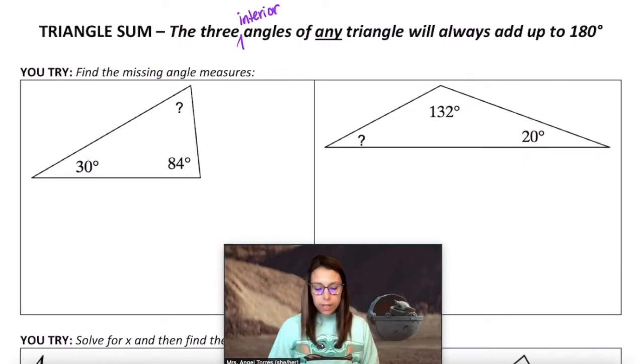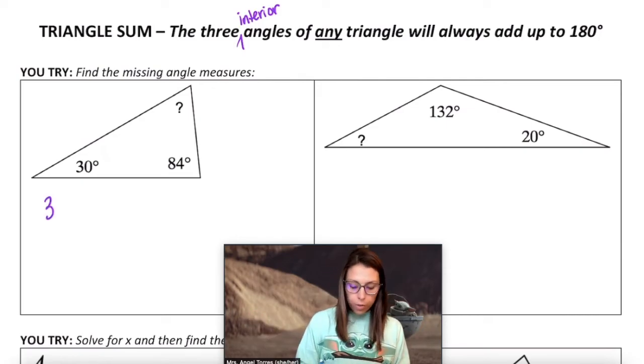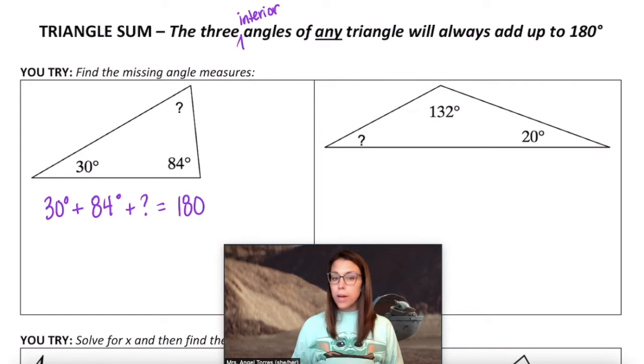So over here I have a triangle where I am given two of the angles and I need to find that third one. So since I know that all three angles add up to 180 degrees, I can set up a pretty easy equation. All three add up to 180 and I can solve.